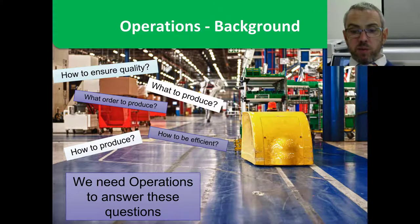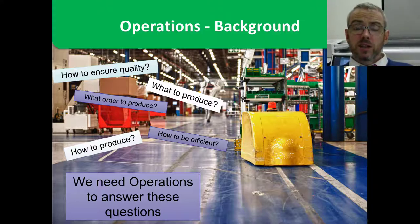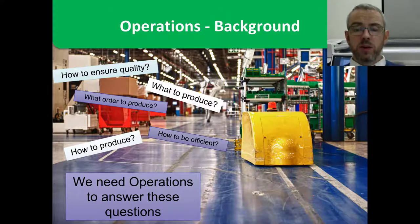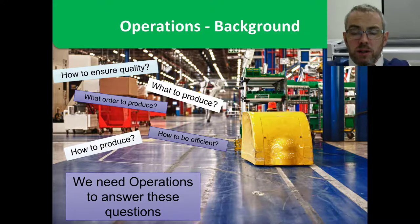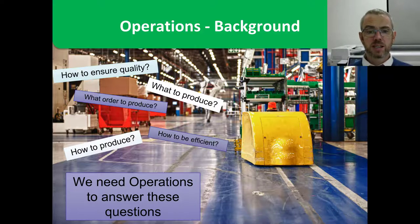The background to operations involves a number of questions you have to ask. First of all, what do you want to produce - what is it you're actually going to be making? And what order are we going to produce it in? There's the classic question: do you make the wheels on the car and then put the engine in, or do you put the engine in first and then the wheels?